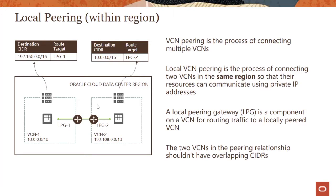There are a couple of things you need to understand, and these come up in exams. The first one is the two VCNs in the peering relationship cannot have overlapping CIDRs. So if you have an overlapping CIDR — for example, a 10.0.0.0/24 address space — it would not work because /24 is a subset of /16. You will not be able to establish a peering connection. Number two is peering is not transitive. If VCN1 is peered with VCN2, and there is a VCN3 peered with VCN2, it does not mean VCN1 is peered with VCN3. Transitive routing is not supported.